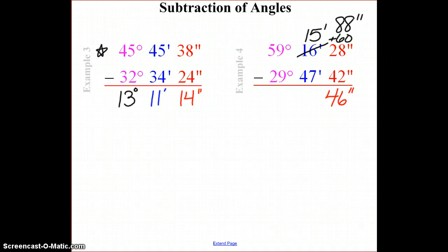So we run into a similar problem again with our minutes. You could have converted both of these at the same time or done one at a time. I'm going to take away 1 degree, converting it back to 60 minutes, so that I get 75 minutes. So now I have 47 minutes which I need to subtract from 75 minutes.